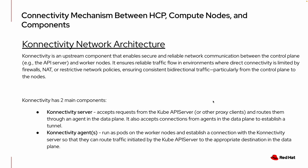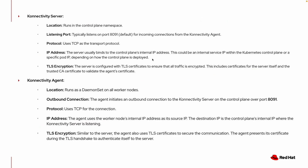Konnectivity is an upstream component that enables secure and reliable communication between the control plane — like the API server and management cluster — and the worker nodes. It ensures consistent traffic flow in environments with limited direct connectivity such as firewalls, proxy, NAT, or restrictive network policies. Konnectivity has two main components: the Konnectivity server and the Konnectivity agent. The Konnectivity server runs in a control plane namespace, typically on port 8091, and uses TCP with TLS certificates for encrypted communication. The Konnectivity agent runs as a DaemonSet on all worker nodes, establishing an outbound TCP connection to the Konnectivity server on port 8091 using TLS certificates for secure communication.